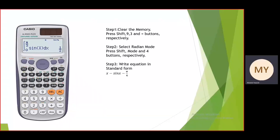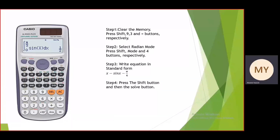To perform step number four, press the shift button and then press the solve button. On your calculator screen it will display 'solve for x' and a value of zero is already given. Press the zero button and then press the equal to button, and the answer x equals to 0.79935 will appear on your screen. This is your final answer.